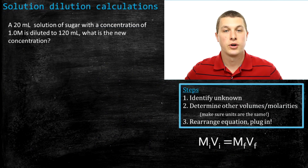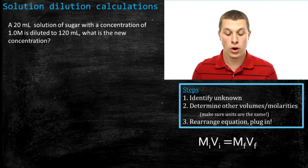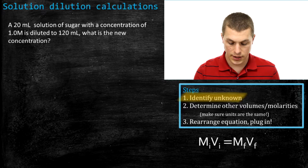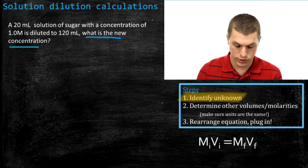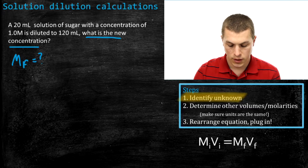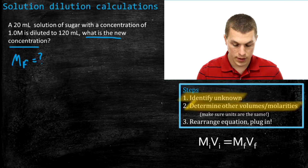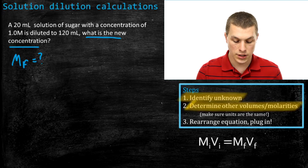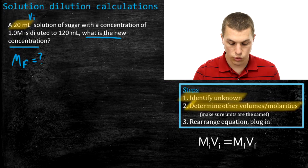Let's look at a more chemistry-like example. A 20 mL solution of sugar with a concentration of 1 molar is diluted to 120 milliliters. What is the new concentration? The first step is to identify the unknown — the question asks for the new concentration, so we want M_f, the final molarity. Next we identify the known variables: the initial volume is 20 milliliters, and the initial molarity is 1 molar.